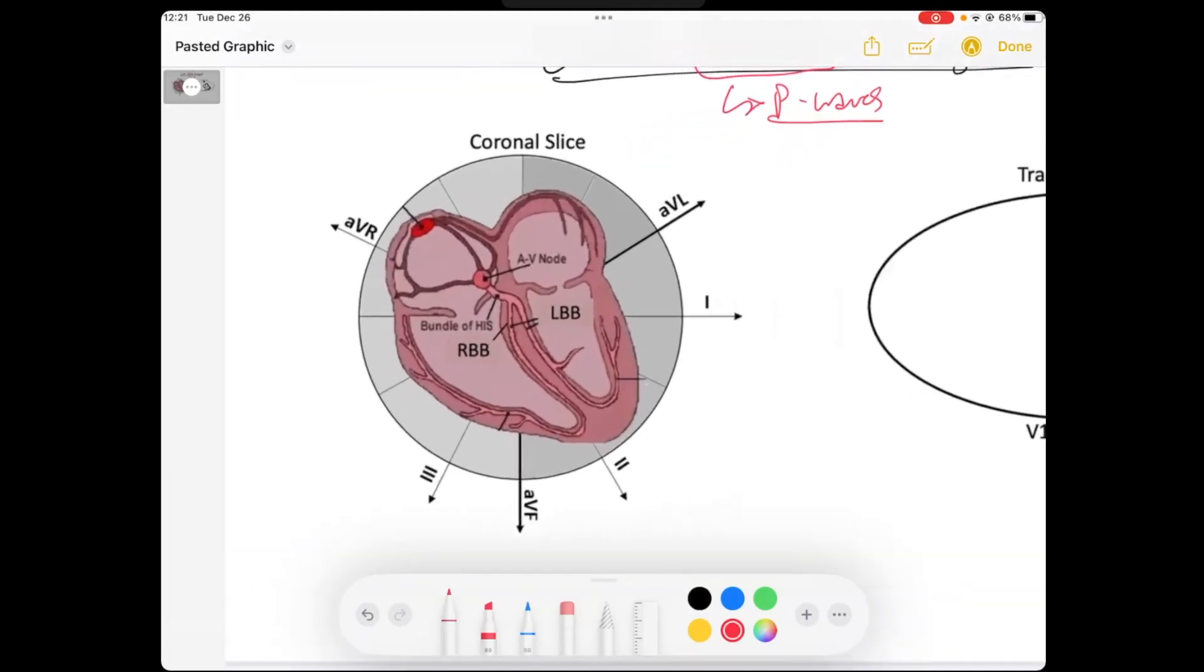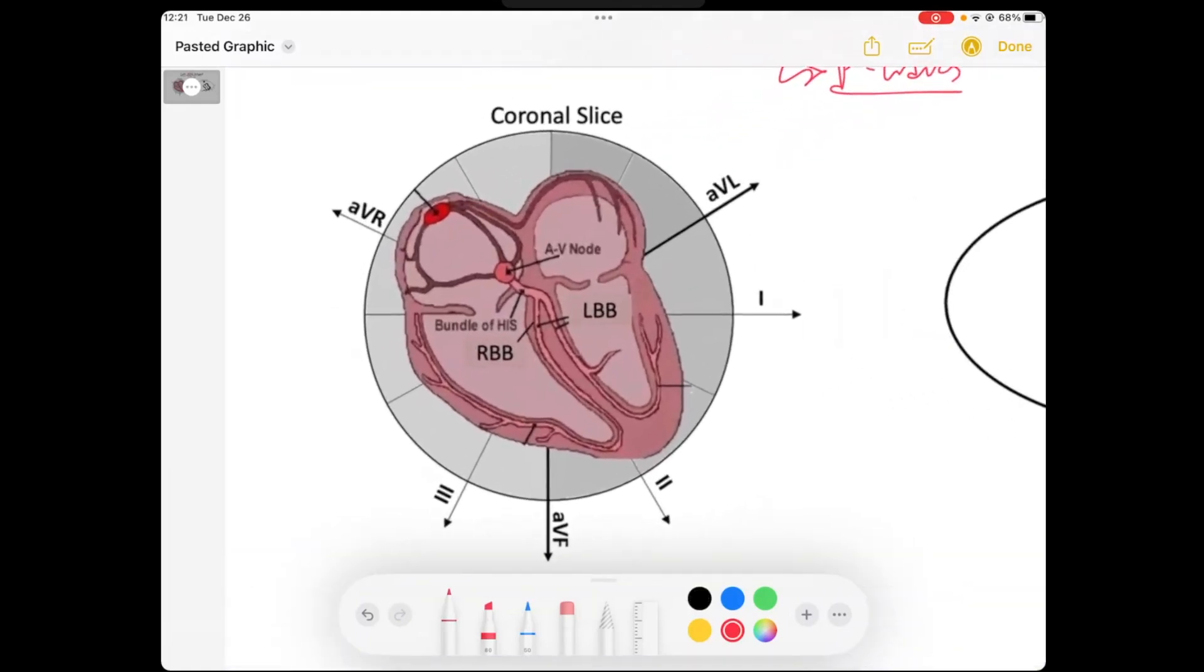And if we take a quick review on this, the in-depth depolarization of the atria, here's my SA node, which is located in the right atria. And as this SA node fires, we said in the previous video that it's going to depolarize the right atria first.